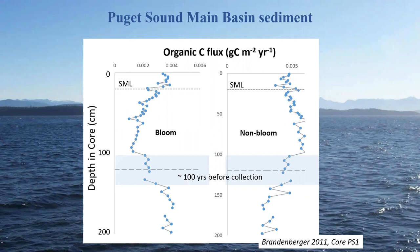Because all the Puget Sound sediment core data were put in together, the question arose whether it was a change over time from bloomy to non-bloomy within Puget Sound. That would be consistent with a change from larger phytoplankton like diatoms in a short food chain to more rapid recycling and smaller phytoplankton. This is the hypothesis being investigated for Puget Sound: a change from bloom to non-bloom in the flux of organic matter into the sediments reflecting a shift from large to small phytoplankton.